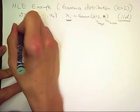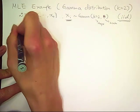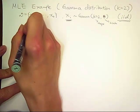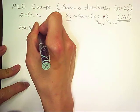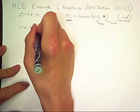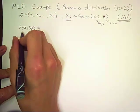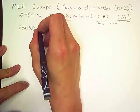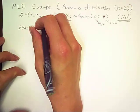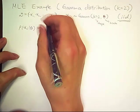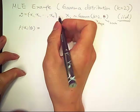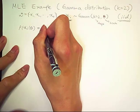So now let's define the probability of X sub i given theta. Since this probability density function follows the gamma distribution with k equals 2.